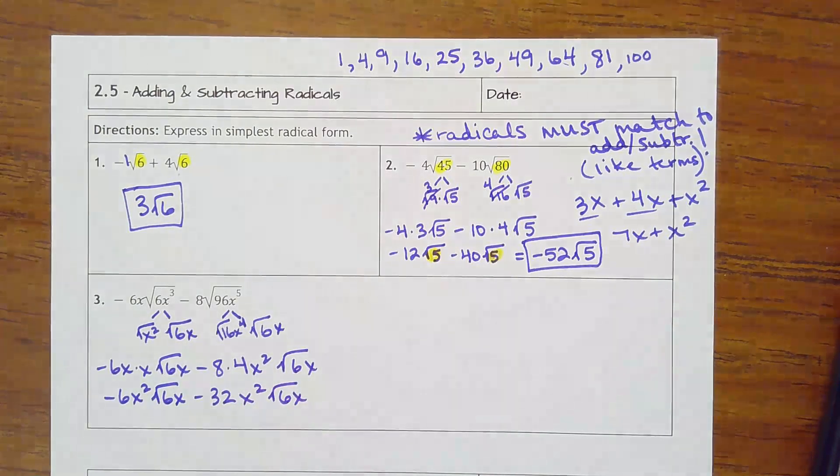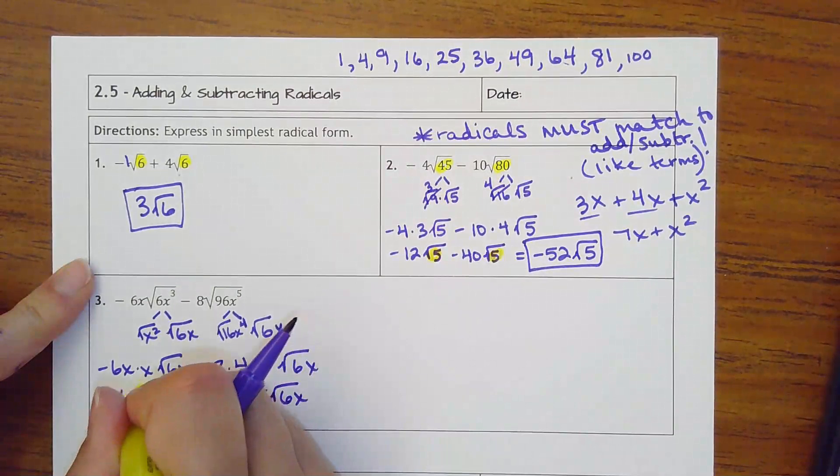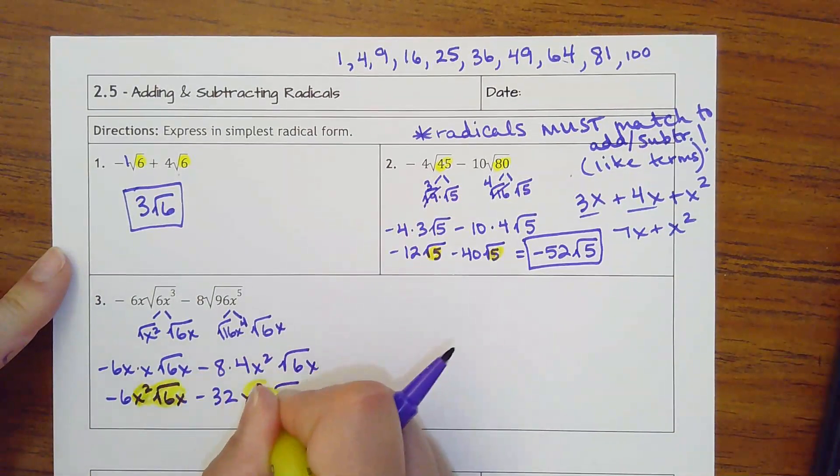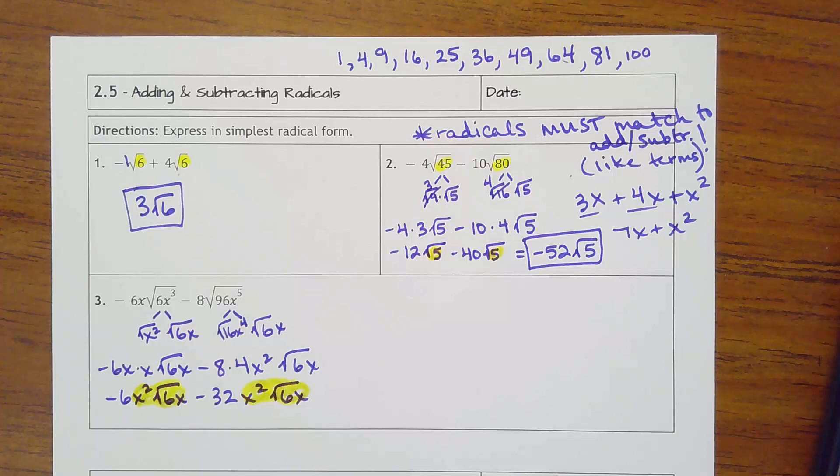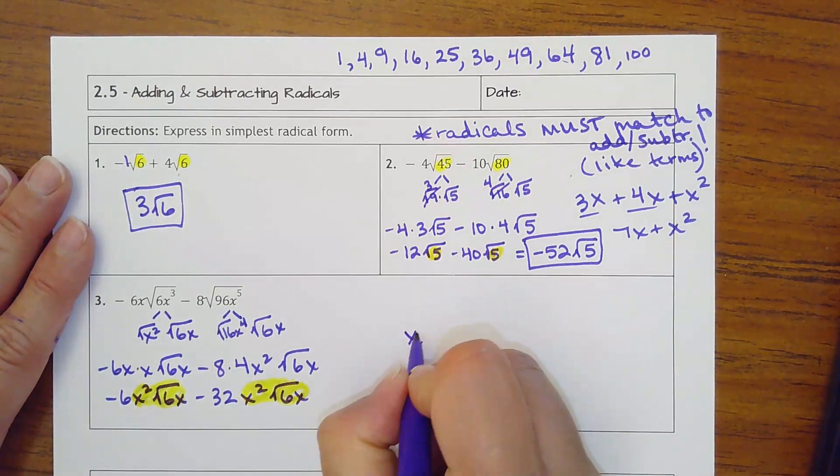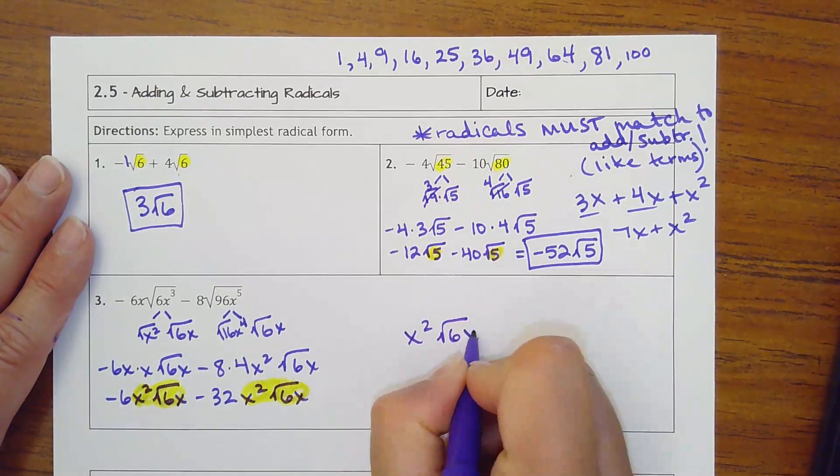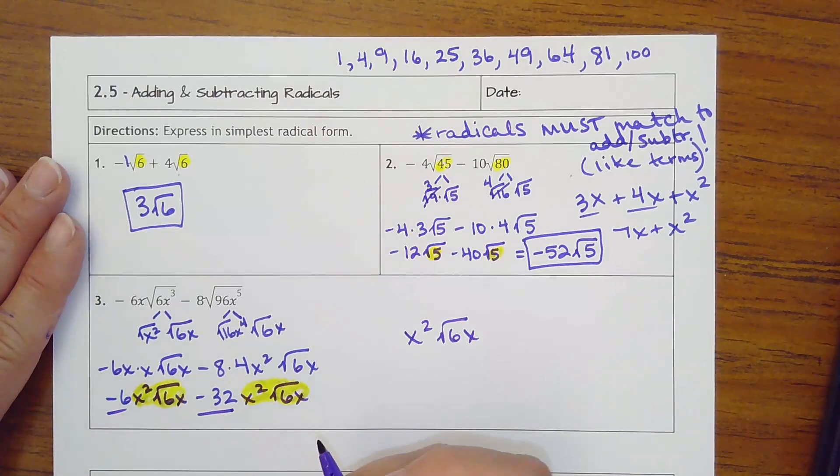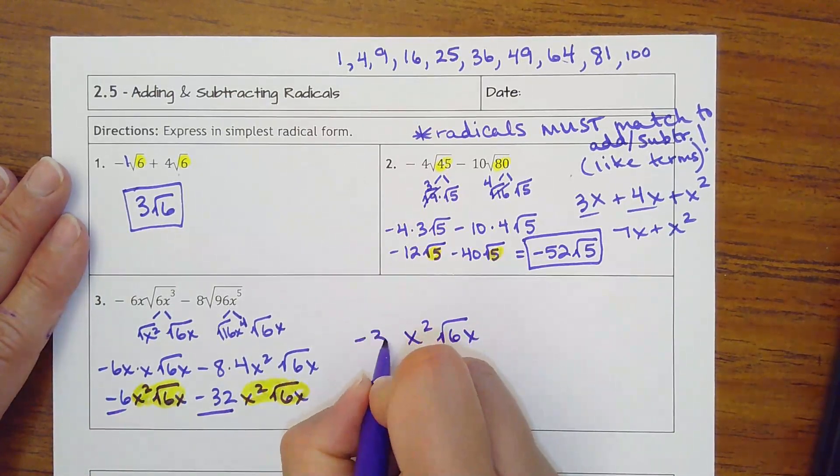So like terms with variables means the number and the radical all have to match. And they do. So it's how many x squared square root of 6x do we have? Negative 6 minus 32 more would be negative 38.